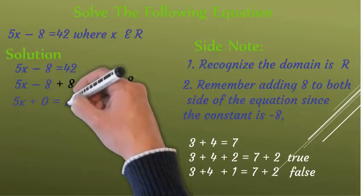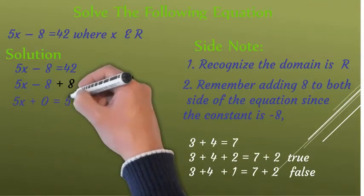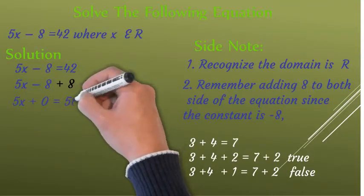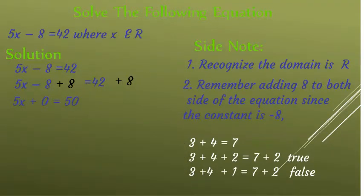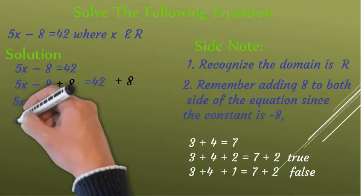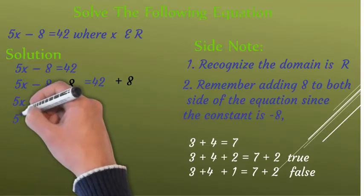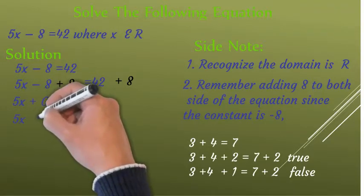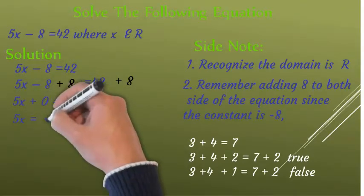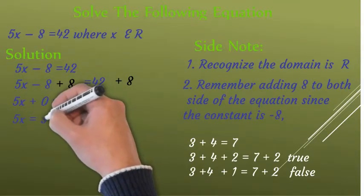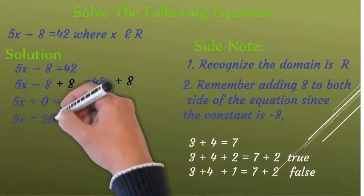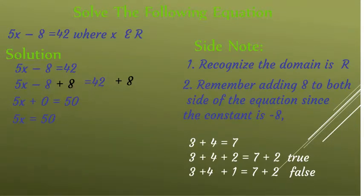Next, minus eight plus eight is zero, and 42 plus eight is 50. Now we have 5x plus zero is equal to 50, which simplifies to 5x is equal to 50.